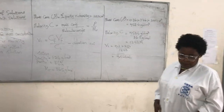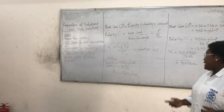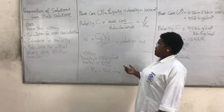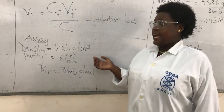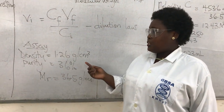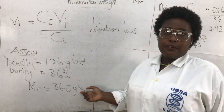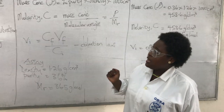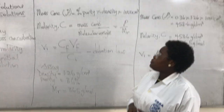The first step is to know the assay. The assay is already written here on the board — it was stated in the question. So we know the density, percentage purity, and molar mass of HCl already. We go to the next step, which is to calculate the mass concentration.